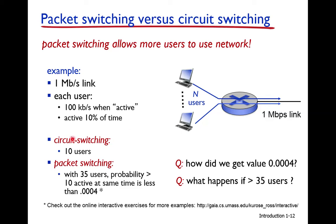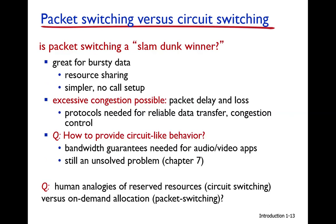Suppose a user is active only 10% of the time — for 10 seconds out of 100 seconds they are sending data, and idle the other 90 seconds. In circuit switching, the circuit remains idle during those 90 seconds. But in packet switching, with 35 users and 10% active, we can accommodate 35 users, because the bandwidth is shared rather than reserved.